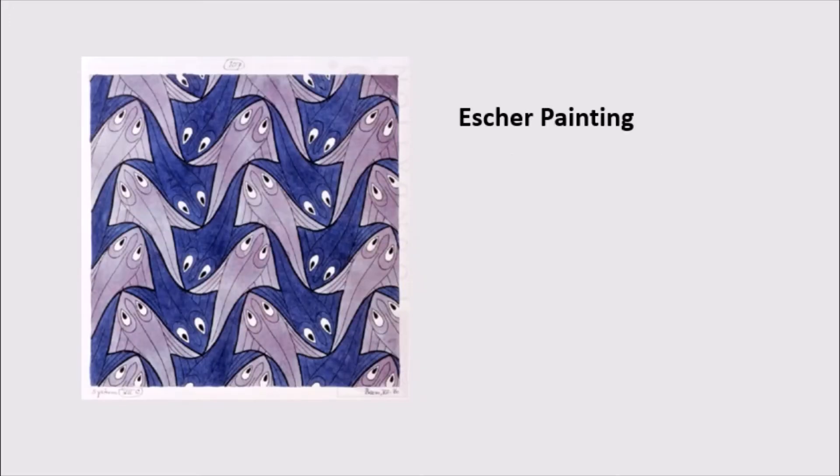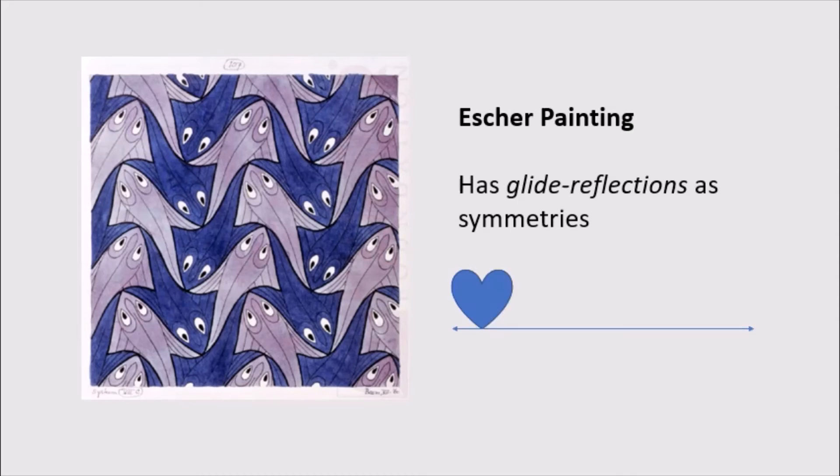If we want to get a little bit weirder, we can look at this Escher painting, which does have the translational symmetries, so it is a wallpaper group. But what other symmetries does it have? It looks symmetrical somehow, but it's a little hard to pinpoint exactly how. It turns out that this actually has glide reflections as symmetries. So a glide reflection is going to be a combination of a translation and a reflection. And if we look closely, we can see that these yellow lines are all lines where we can apply a glide reflection to get a symmetry of this painting.